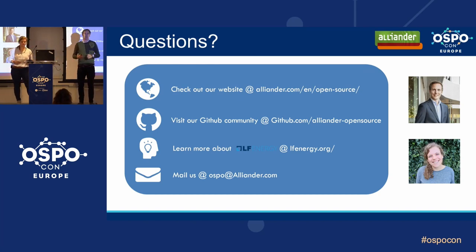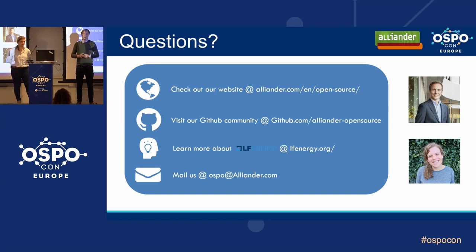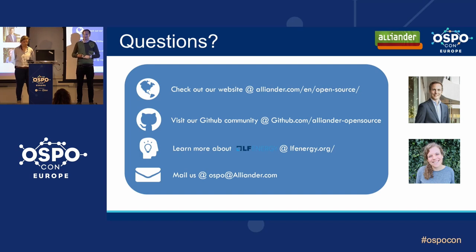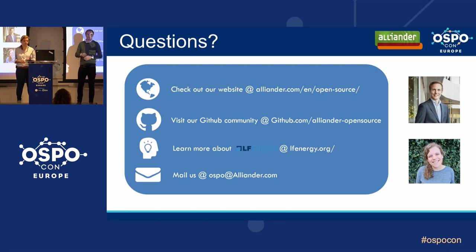Thank you Judith. Today we talked about the challenges of a distribution system operator like Alliander. We shared the importance of co-creation, open source and the OSPO for Alliander's digitalization ambitions. We dived into what our OSPO does, who is in it, and we shared our story and what we have learned. We really hope this will help and inspire you in your journey. Please check out our website to learn more, and check out our GitHub community if you want to get started with one of our open source projects.